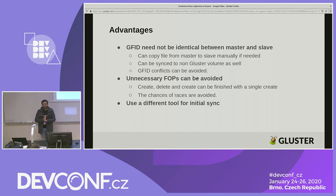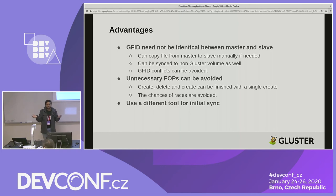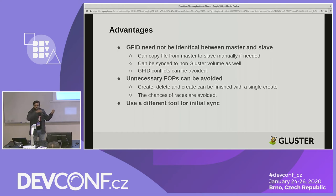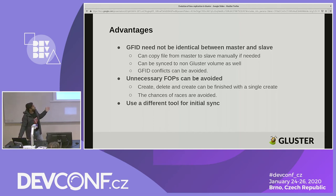Another advantage: if you see any failures during sync for a particular file, you can manually copy that file from master to slave — something we can't do currently. Also, with the old hybrid crawl, crawling the entire file system to create change logs was expensive. With path-based geo-replication, we can use tools that just go through the file system and sync it to the slave, reducing overhead. These are the advantages of path-based geo-replication.